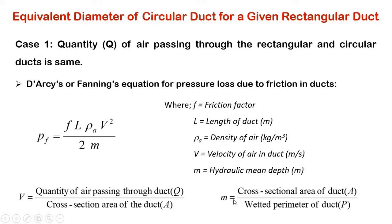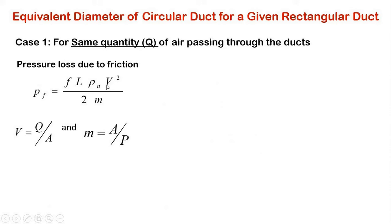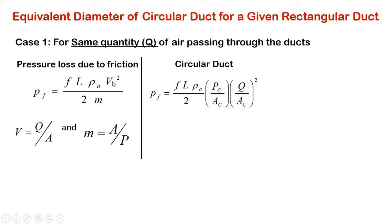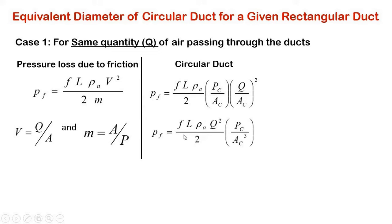If we put V equal to Q divided by A, and M equal to A divided by P, then for circular duct we get this equation. V squared is replaced with (Q divided by A_C) squared, where A_C is the cross-sectional area of the circular duct. The hydraulic mean depth M in the denominator becomes the wetted perimeter of circular duct divided by cross-sectional area of circular duct. We can then rewrite this equation accordingly.